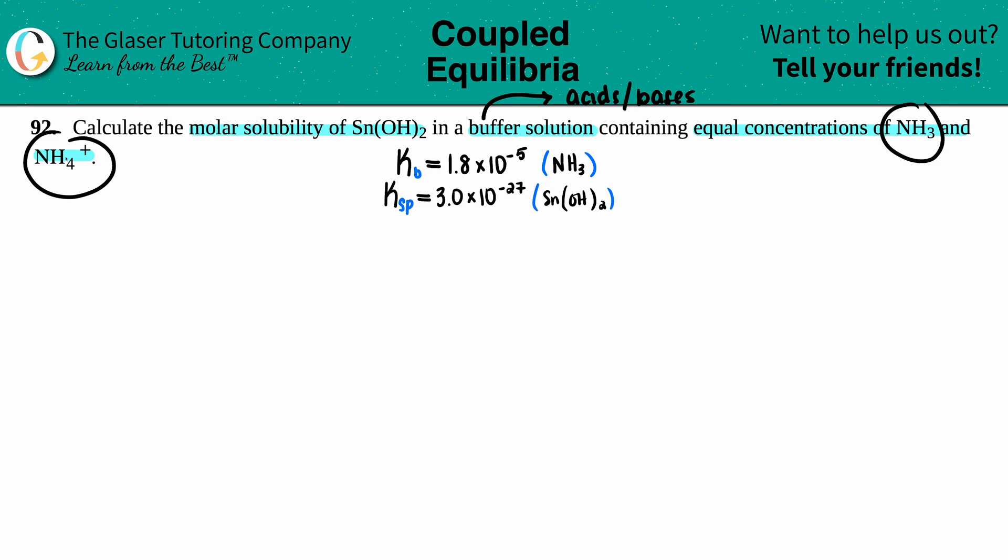That's what they gave us here. They told us we had NH3 and NH4+. Since NH4+ has one more hydrogen, this would be classified as the acid and NH3 would be the base.